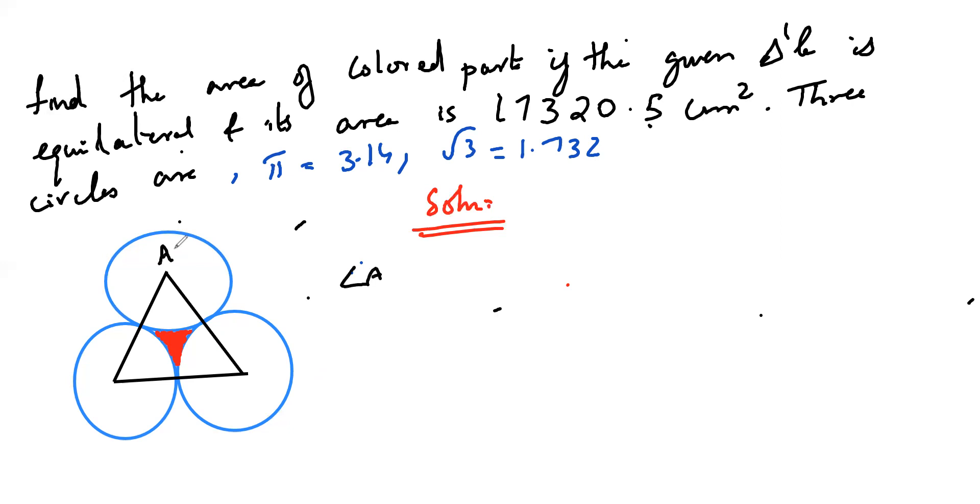Angle A, if I take here A, B and C, angle A is equal to angle B is equal to angle C is equal to 60 degree. Equilateral. So three sectors are equal of angle 60 degree.